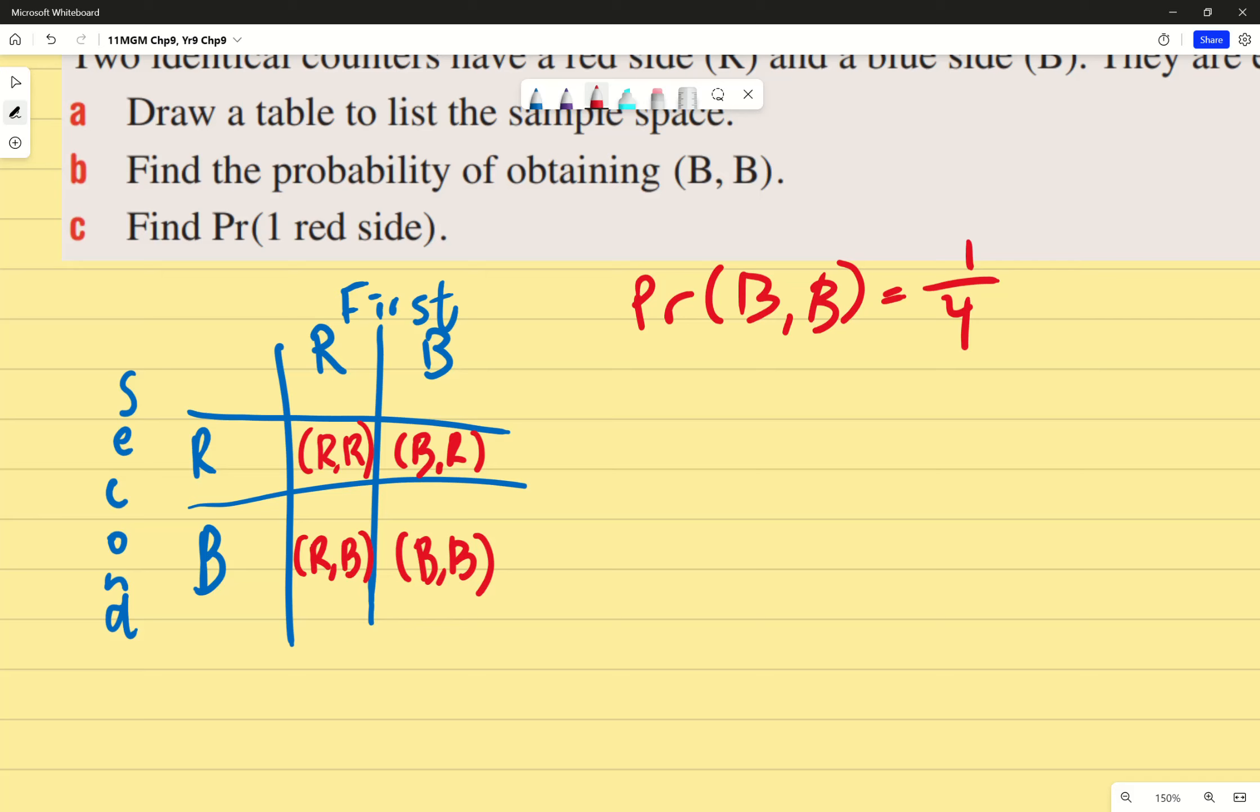It says find the probability of one red side. So the probability of one red, I'm looking for one red side, which is one, two options, and a total of four. Two out of four, which equals one half. So we'll make it very clear what are the outcomes, and then what are the outcomes I want.